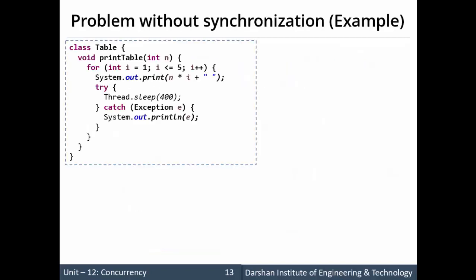Let's say we have a class Table which has one method printTable, in which we pass an integer value. This method will print the multiples of the integer n passed to printTable — that is, the times table. Whatever value is passed, its multiples will be printed up to 5.